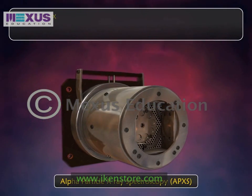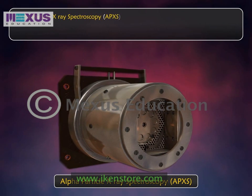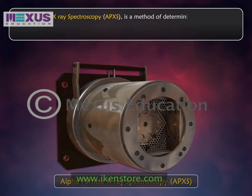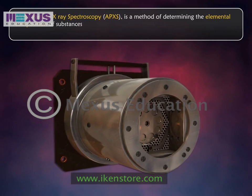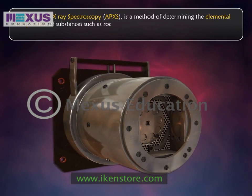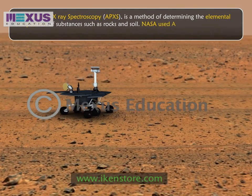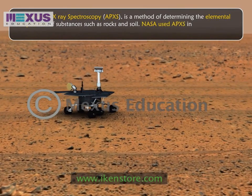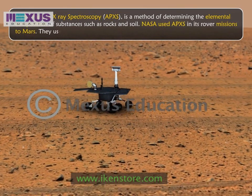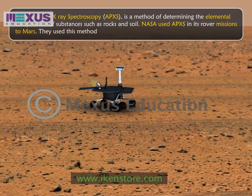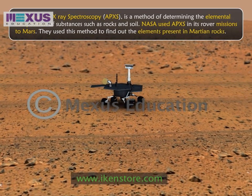Alpha particle X-ray spectroscopy, APXS, is a method of determining the elemental composition of substances such as rocks and soil. NASA used APXS in its rover missions to Mars, and used this method to find out the elements present in Martian rocks.